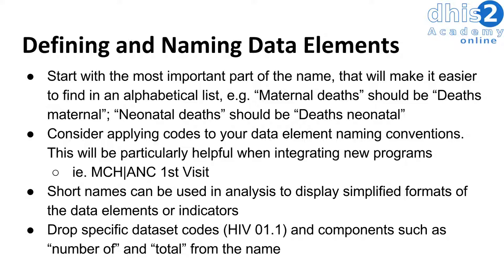When we are creating these data elements, we want to make sure that we drop a couple of conventions taken from the datasets. Firstly, we want to drop any specific dataset codes. For example, if I am looking at an HIV form and I have data elements coded as HIV 1.1, HIV 1.2, HIV 1.3, etc., I want to make sure to drop that from the name. When we create the data elements, you will see there are provisions to include that code in other fields, but there's no need to include that code in the name.